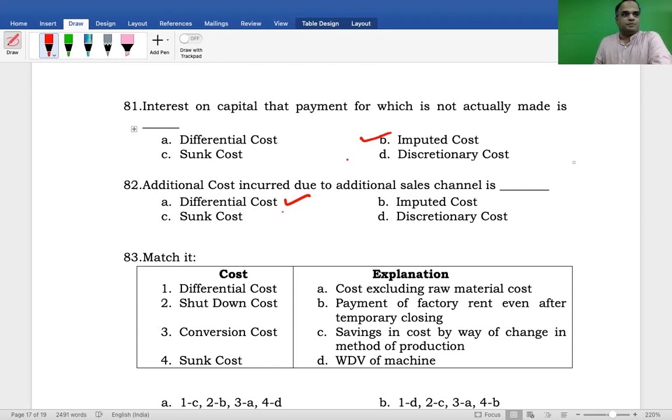Differential cost can be classified into two types: one is incremental cost, another one is decremental cost. Additional cost incurred for additional change in channel, change in cost due to change in level of activity. Therefore, the correct answer is Incremental Cost. Incremental cost forms part of the differential cost.